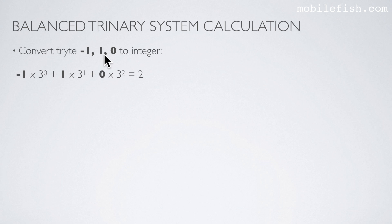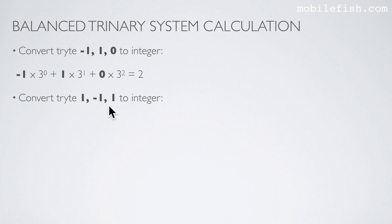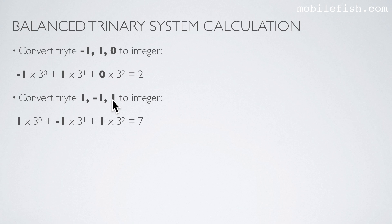So this is position 0, 1, and 2. But in a binary system you go from right to left. Let's try another — let's convert this tryte into an integer. Again, this value 1 is this value 1, this minus 1 is this minus 1, and this 1 is this 1. These are the positions: position 0, 1, and 2. And if you calculate this, you will get the value of 7.